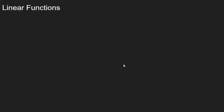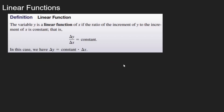So let's talk a little bit about linear functions. For a linear function, the variable y is a linear function of x if the ratio of the increment of y to the increment of x is constant — in other words, delta y divided by delta x equals a constant. This is really just talking about slope.